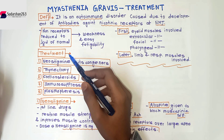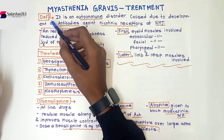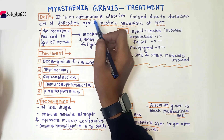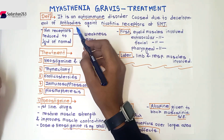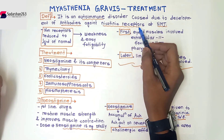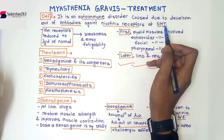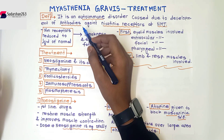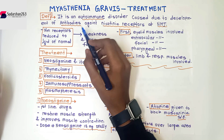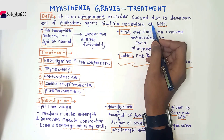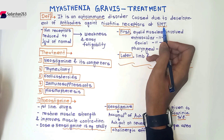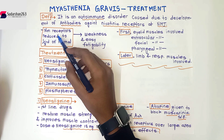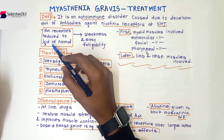First we will learn the definition. Myasthenia gravis is an autoimmune disorder caused due to development of antibodies against nicotinic receptors at the neuromuscular junction (NMJ). In autoimmune disorders, auto-antibodies are formed — in this case, antibodies are formed against nicotinic receptors at the neuromuscular junction.